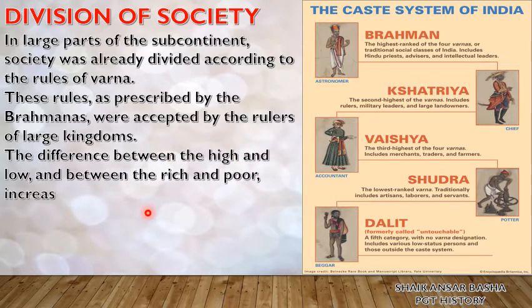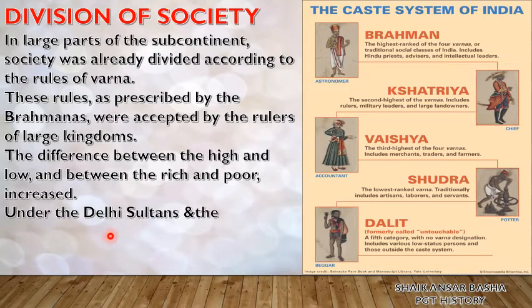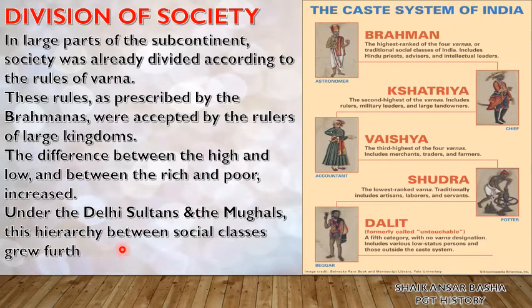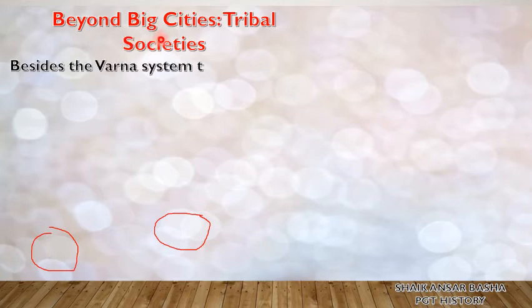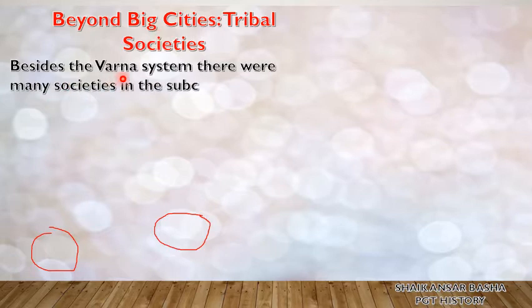All those rulers accepted the varna-based theory proposed by the Brahmanas. The difference between the high and low, and between the rich and poor, increased during this period. Under the Delhi Sultans and the Mughals, this hierarchy of the caste system grew even more rigid. Beyond the big cities, tribal societies also existed simultaneously in our country.